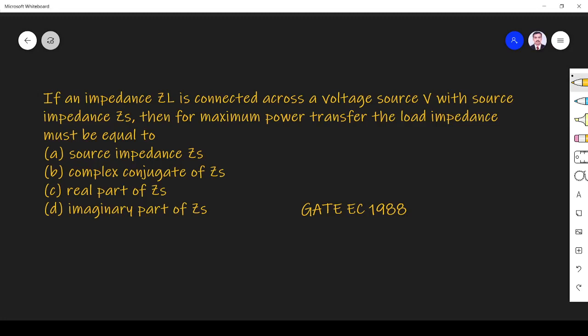Hi friends, let us solve circuit theory problems asked in GATE ECE 1988 paper. The question is: if an impedance ZL is connected across a voltage source with the source impedance ZS, then for maximum power transfer the load impedance must be equal to...